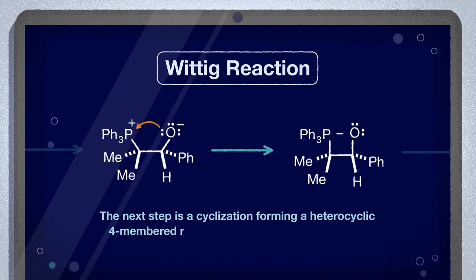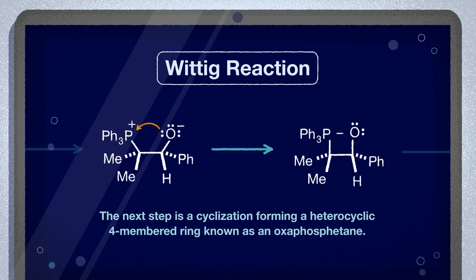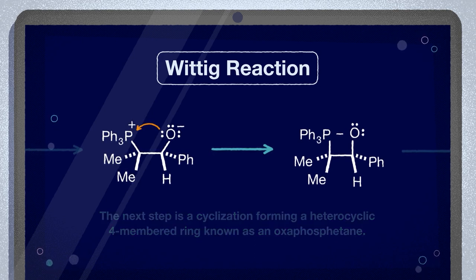The next step is a cyclization forming a heterocyclic, four-membered ring known as an oxaphosphatane.